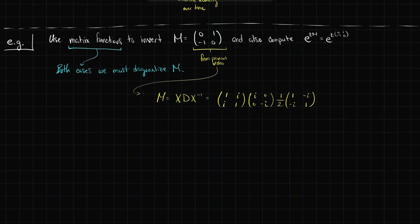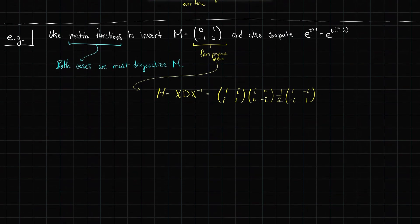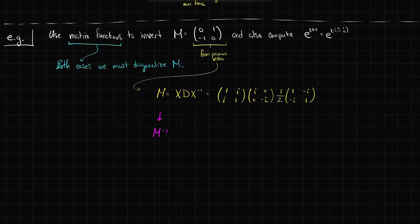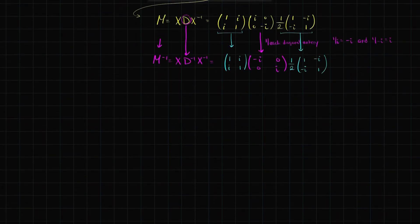To invert a matrix function, we just invert the diagonal — taking 1 divided by each of the eigenvalues. For M inverse, we grab the diagonal and invert it, taking 1 divided by each diagonal entry. Now 1/i = -i, and 1/(-i) = i. The X's just come along for the ride — X doesn't change when I take a matrix function. Same for X inverse, which is still (1/2)[[1,-i],[-i,1]].